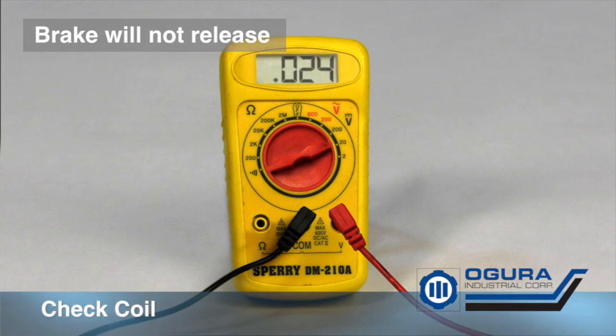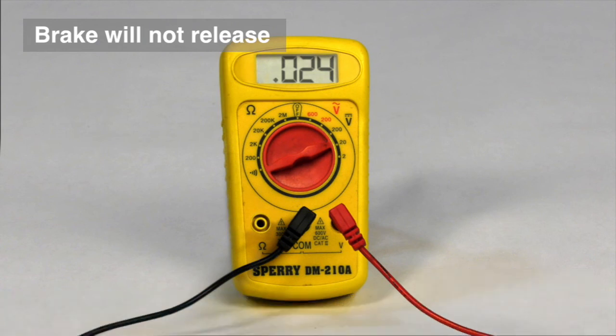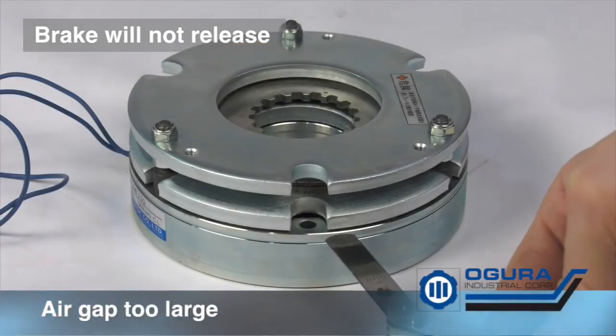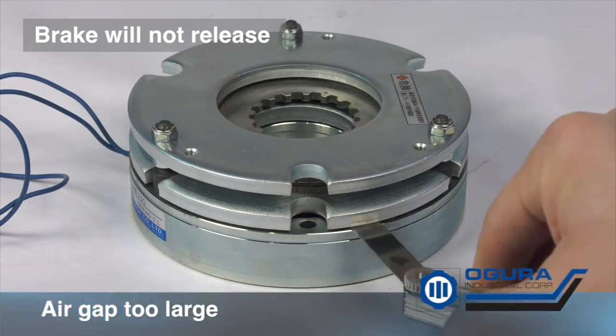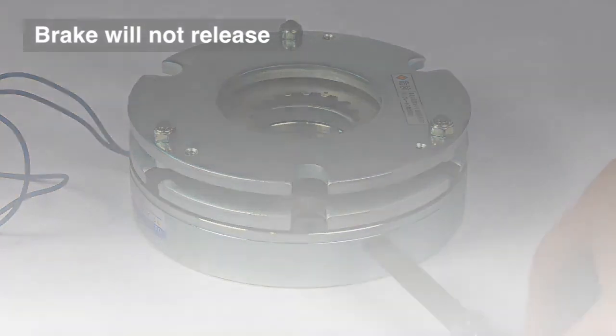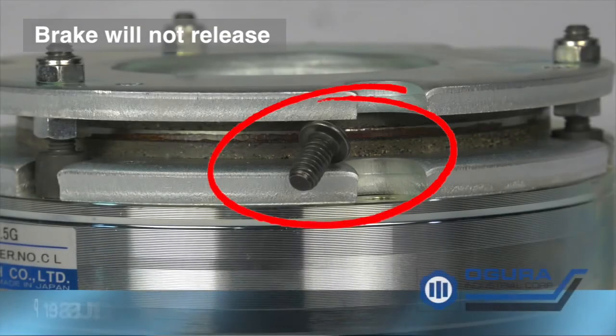Brake will not release. First, check if proper voltage is going to the brake. Check power supply and check leads going to the brake coil. Air gap too large. Brake friction material is worn down. Check air gap.